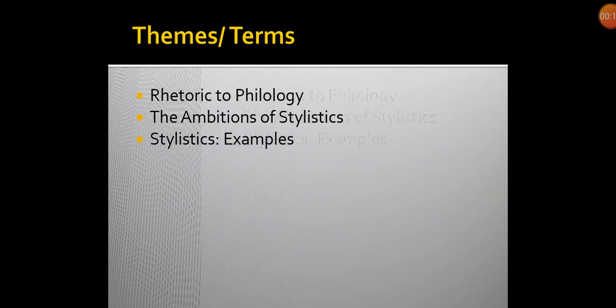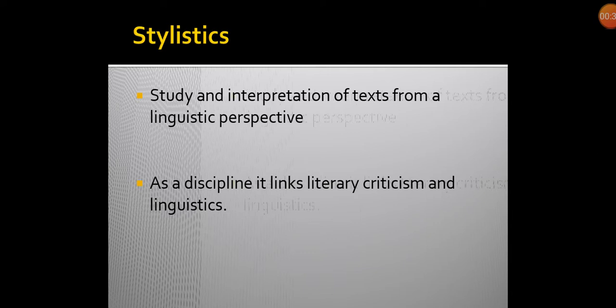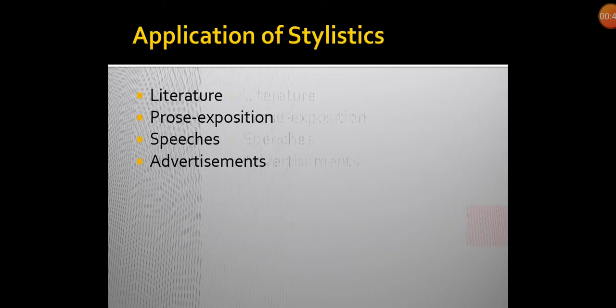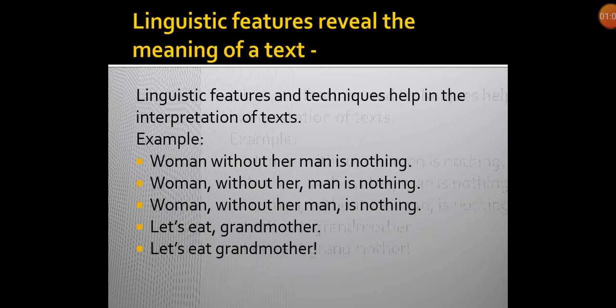So far, we understood a little bit of the themes and terms that are used in stylistics, especially rhetoric to philology — the ambitions of stylistics and stylistics examples, which is what Peter Barry seems to focus upon. Then we looked into a few of the definitions of stylistics and its methodology, whether it is a theory or a practice, or a theory born out of practice. And its objective features and its applications, some of its applications today as opposed to the ones it had earlier.